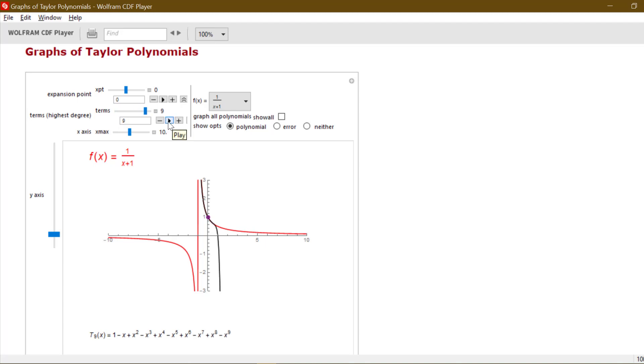So that question of where does the power series actually converge to the function? Where does our power series representation of a function actually equal the function? It might be for all x like we saw for the cosine function, or it might just be for certain values of x where a power series representation would actually equal the function.